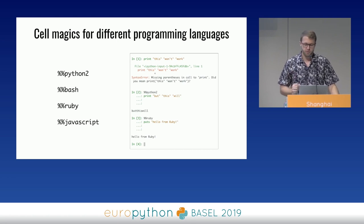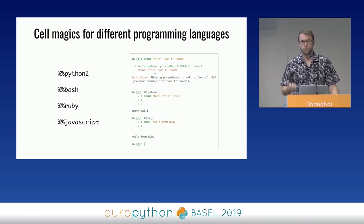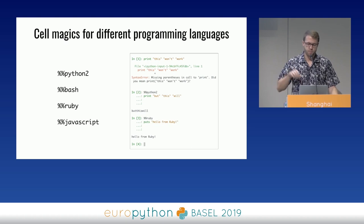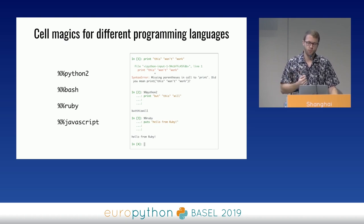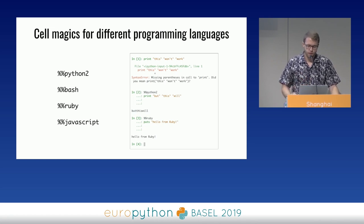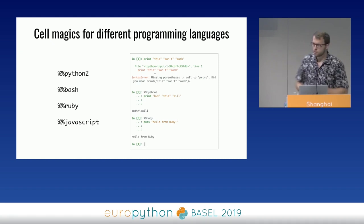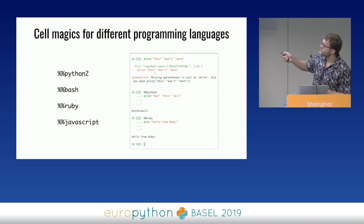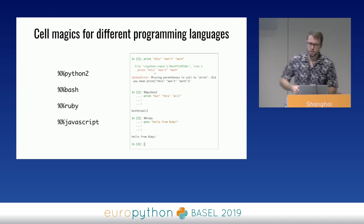One interesting use case is when you want to quickly test a piece of Python 2 code. You can type `%%python2`, then write the code, press enter twice, and IPython will execute it with no problems. It works with other languages like Bash, Ruby, or JavaScript out of the box. And IPython is actually correctly highlighting the Ruby syntax in the last example.